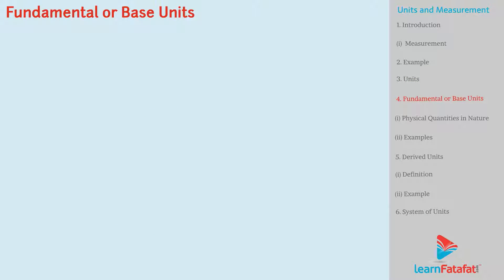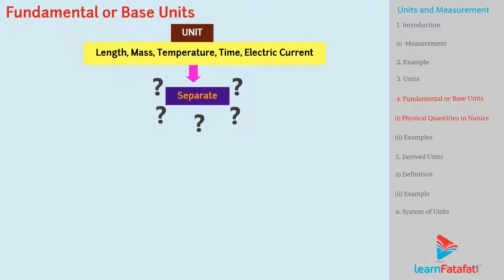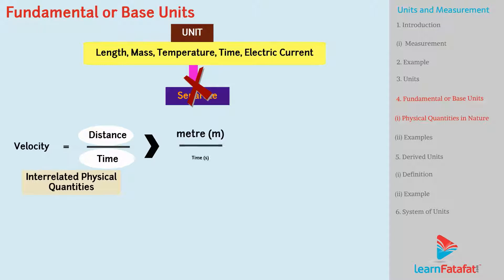Fundamental or base units. In nature, we find that there are a large number of physical quantities. So, do we need separate units for each physical quantity? The answer is no, because most of the physical quantities are interrelated. Thus, to express the units, we just need a limited number of units. These are called the fundamental units.